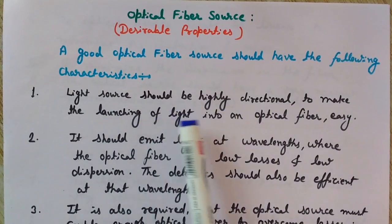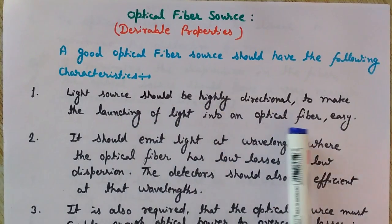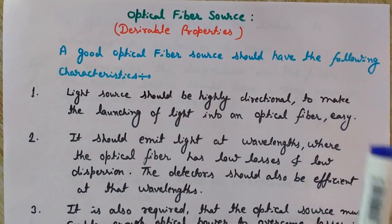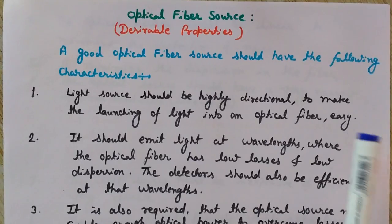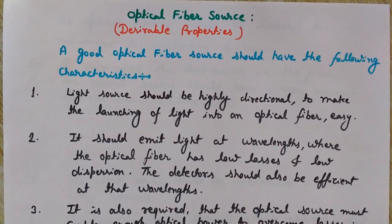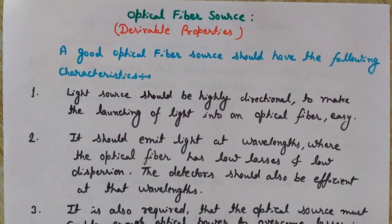Property one: the light source should be highly directional to make the launching of light into an optical fiber easy. This is a very obvious property — the light that comes out from the optical source should be very directional so that we can direct it easily into the core of the fiber.